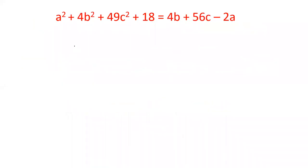To start with the question, first of all, take all the terms which are on the right side of the equation to the left side. So that is a² + 4b² + 49c² + 18 - 4b - 56c + 2a = 0.